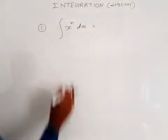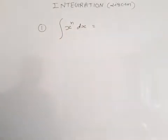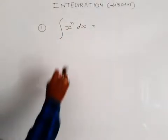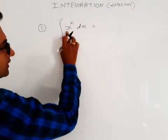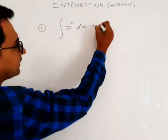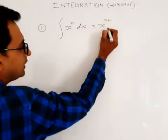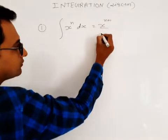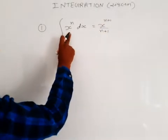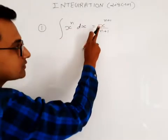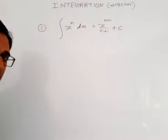If x raised to n dx is given, then the equation of integration is: we have to add 1, so x raised to n integrates to x raised to n plus 1, divided by n plus 1, plus c. Here c is the constant.